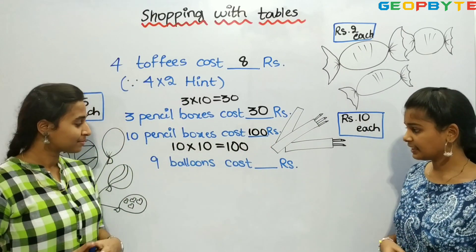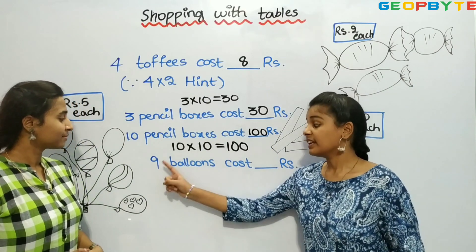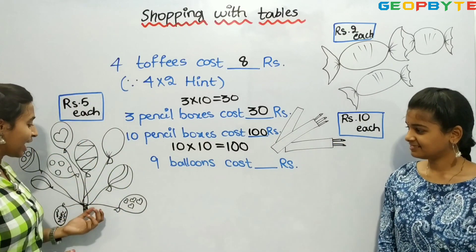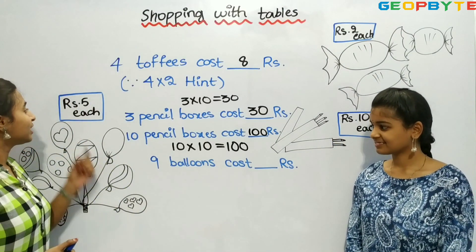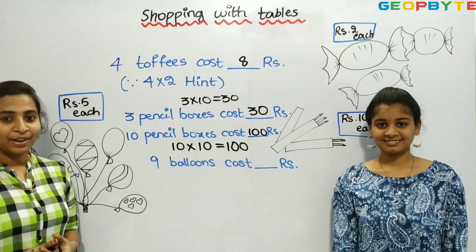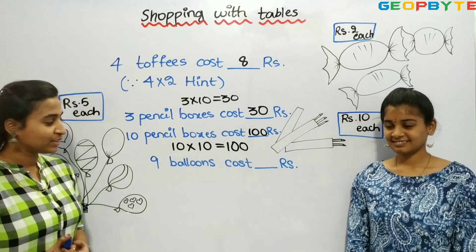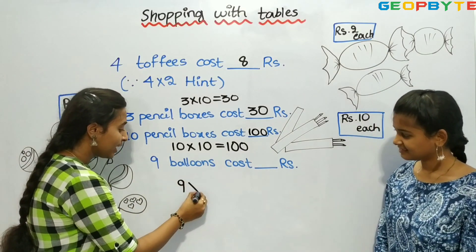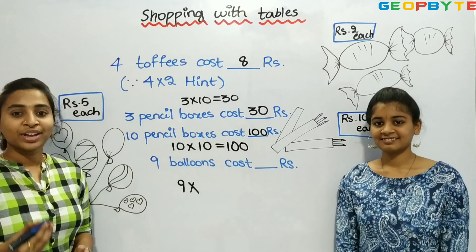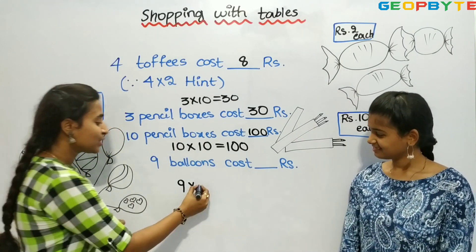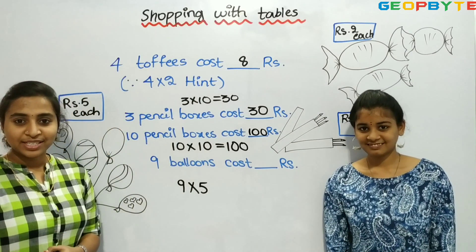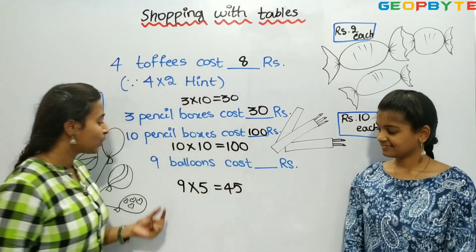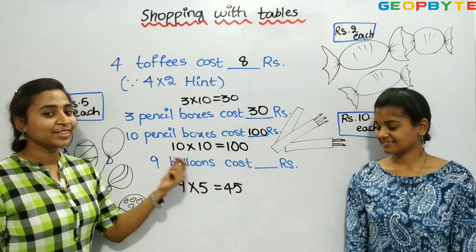Now, let us see the next one. 9 balloons cost dash rupees. Here we have balloons, rupees 5 each balloon. We need to find out the cost for 9 balloons. So, 9 balloons into the cost of each balloon is rupees 5 — that is 9 into 5. 9 fives are 45. So, 9 balloons cost 45 rupees.